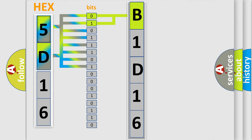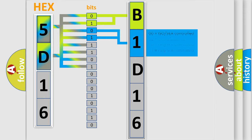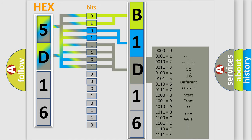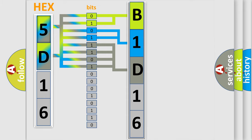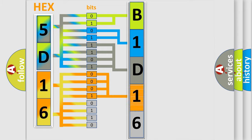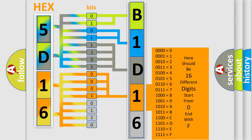The next two bits determine the second character. The last four bits of the first byte define the third character of the code. The second byte is composed of a combination of eight bits. The first four bits determine the fourth character, and the combination of the last four bits defines the fifth character.